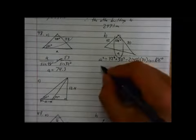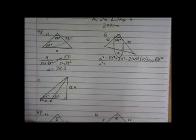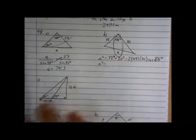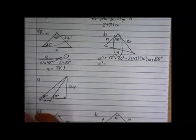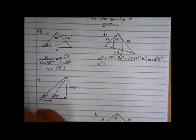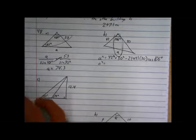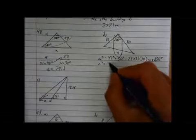All right, let's solve this thing. I'm just going to punch this whole thing into my calculator: 42 squared plus 30 squared minus 2 times 42 times 30 times cos 106.